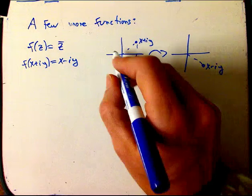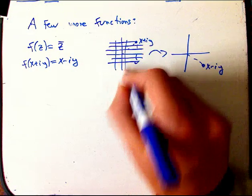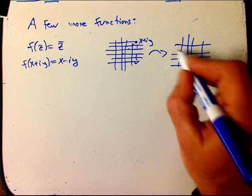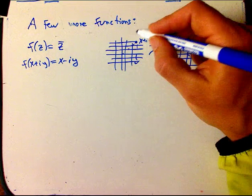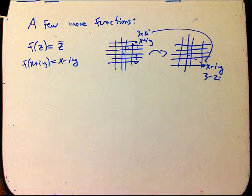So the picture for that is very simple. If we look at where the grid lines would go, it really doesn't do anything interesting to the grid lines, you can't even notice it, it's just the labeling of the grid lines that's different. That's 3 plus 2i, then it goes down here to 3 minus 2i.